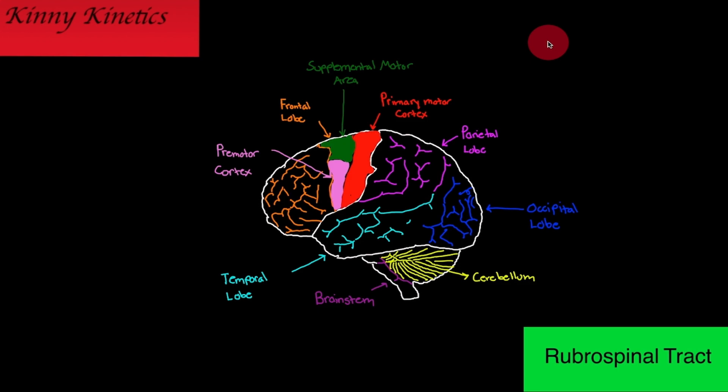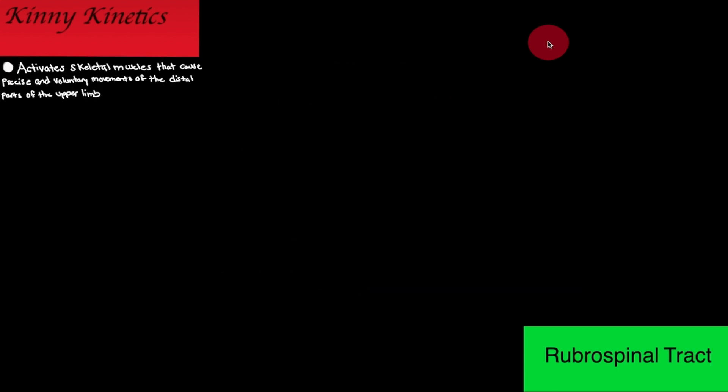The rubrospinal tract is responsible for sending signals that activate skeletal muscles that cause precise involuntary movements of the distal parts of the upper limb.